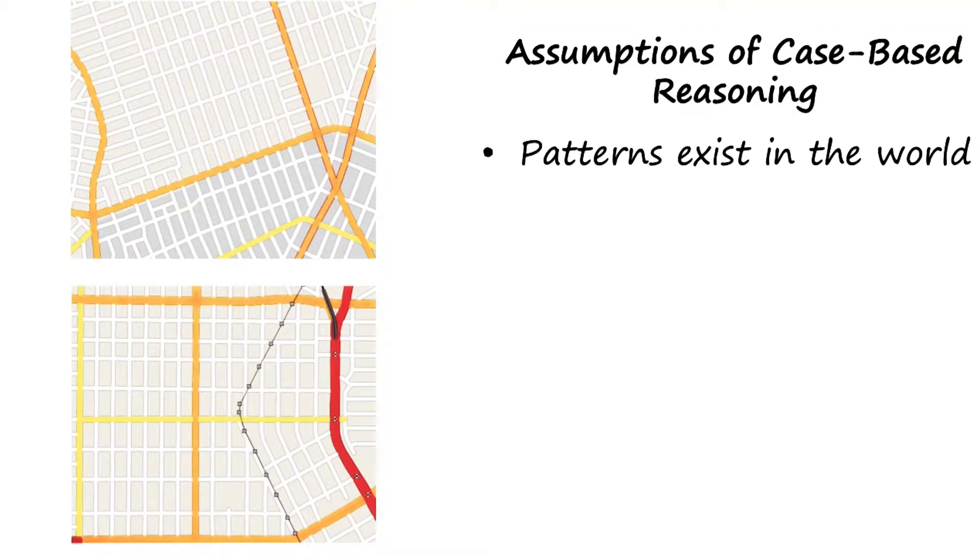So like any other theory of intelligence, case-based reasoning has some assumptions. The first assumption is that there are patterns to the problems that agents encounter in the world. The same kinds of problem tend to reoccur again and again.